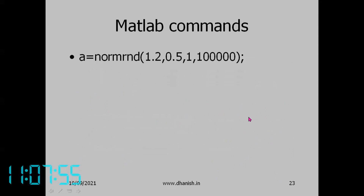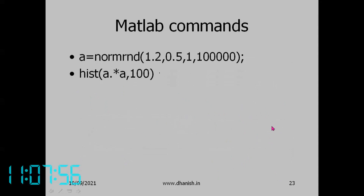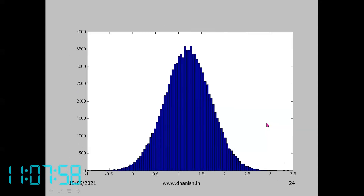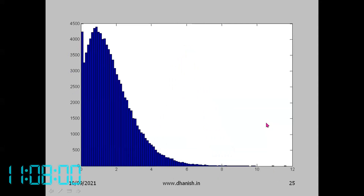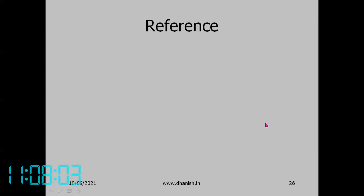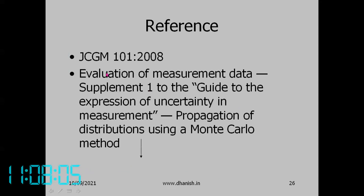The GUM extension — Supplement 1 to the Guide to the Expression of Uncertainty in Measurement — covers propagation of distributions using the Monte Carlo method.